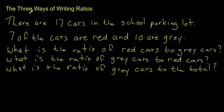In this video we're going to look at the three ways of writing ratios. Here we have our question. There are 17 cars in the school parking lot. Seven of the cars are red and ten are gray.